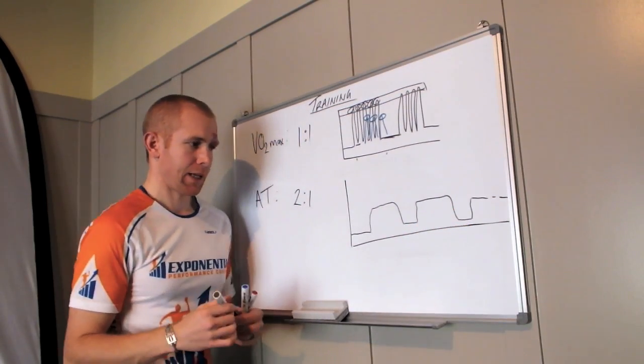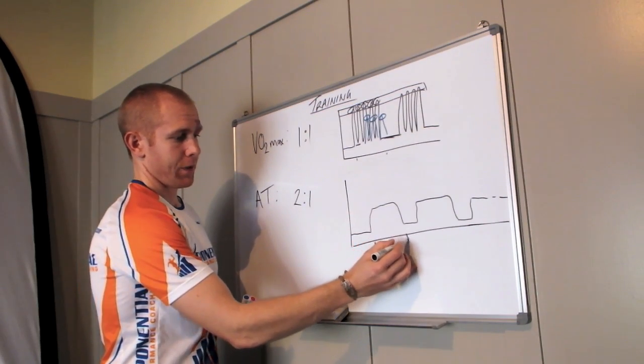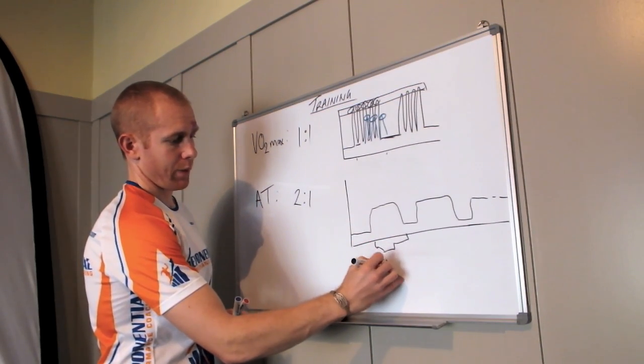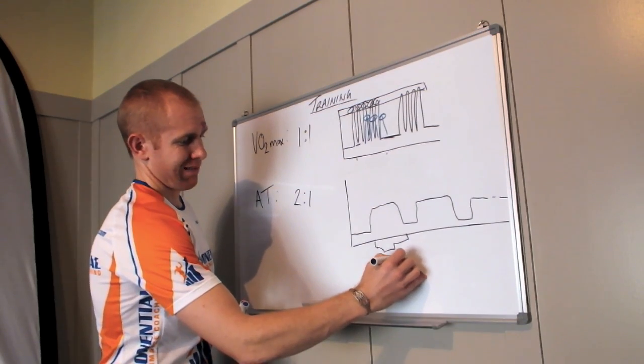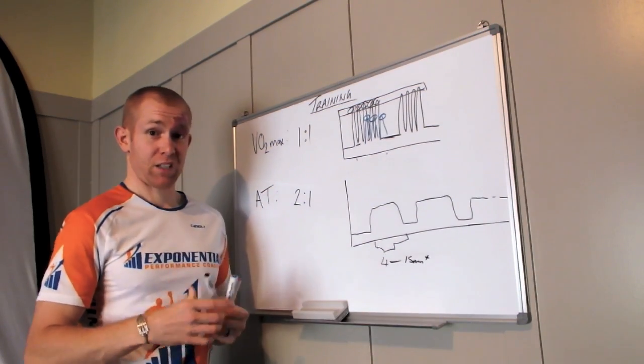And as you can see, these intervals are a bit longer. Usually for anaerobic threshold intervals, somewhere between four to even 15-minute plus is really good.